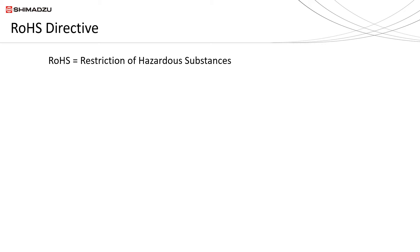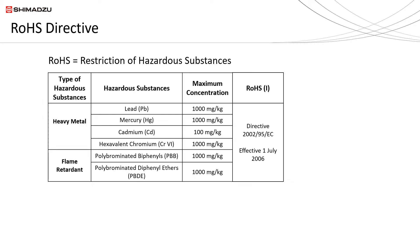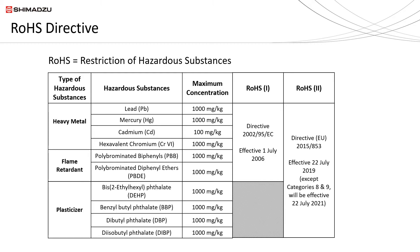RoHS is an acronym for Restriction of Hazardous Substances. It is a directive to restrict the use of hazardous substances in electrical and electronic equipment. Since July 2006, maximum allowable concentrations of targeted heavy metals and flame retardant compounds in electrical and electronic equipment had been enforced, which is known as RoHS 1. These regulated substances must not exceed the concentration limit as shown in this table. By July 2019, four more substances classified as plasticizers had been added into the RoHS list, and this updated RoHS list is now known as RoHS 2.